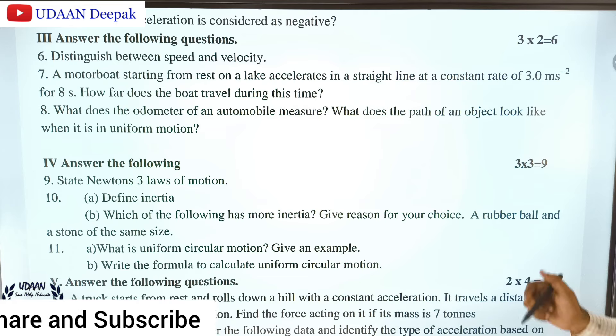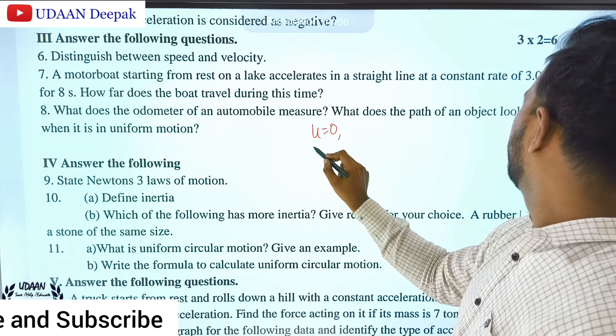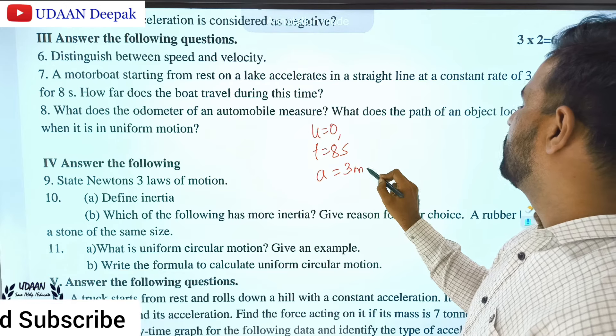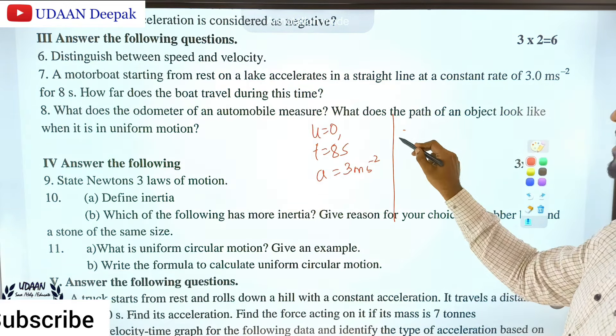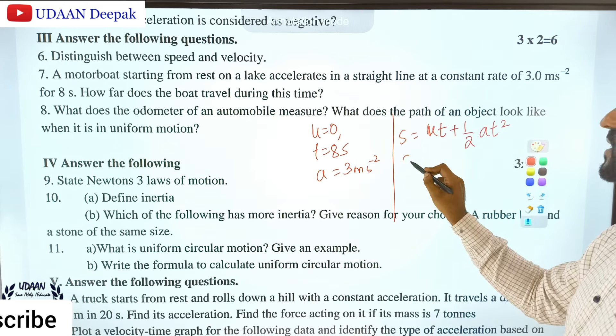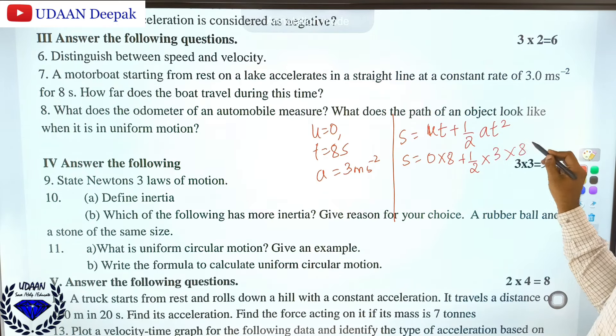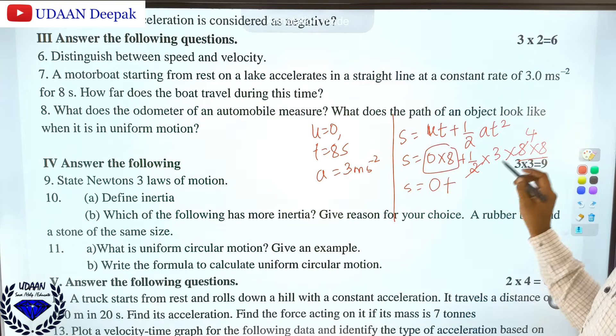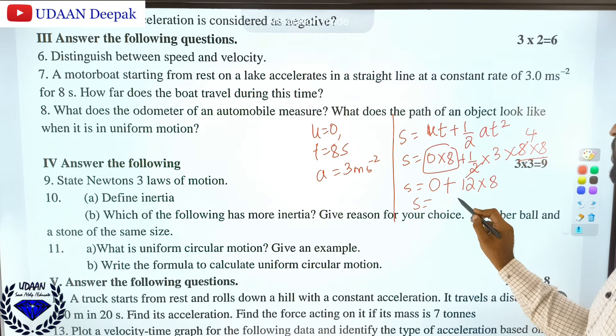A motorboat starting from rest on a lake accelerates in a straight line at a constant rate of 3 meters per second squared. Initial velocity u is zero, time is 8 seconds, acceleration is 3 m/s². The distance formula is s equals ut plus half at squared. So s equals zero into 8 plus half times 3 times 64, which equals 96 meters.